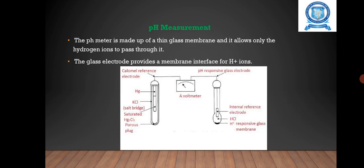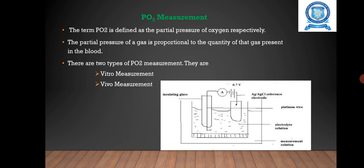pH measurement is made up of a thin glass membrane that allows only the hydrogen ions to pass through it. The glass electrode provides a membrane interface for H+ ions. In order to minimize such effects, the electrodes are used with a screen. The screen is usually grounded to the measuring instrument. Errors in pH measurement due to temperature effect can be compensated either manually or automatically.